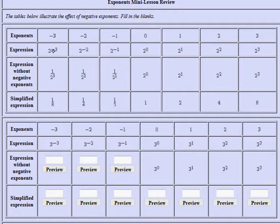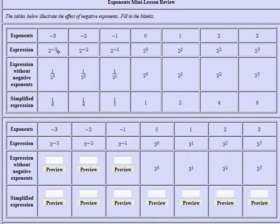It turns out that you can write this in an equivalent form — it will have the same value — and you can write it without the negative exponent, but the rule is that that must be done in the denominator. So you take 2 to the minus 3 and you can write it as 2 to the positive 3, provided you move that down into the denominator.